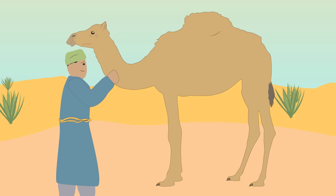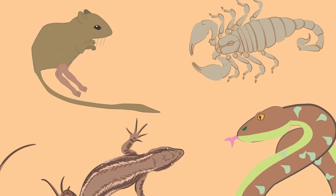Desert animals have adapted to the harsh conditions so they can stay cool and use minimum levels of water. A camel, for example, can go days without food or water as they store fat in their hump. Kangaroo rats, snakes, lizards, and insects are other examples of desert animals.